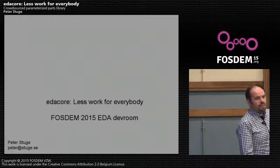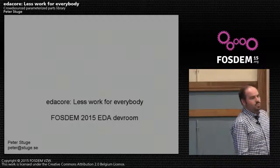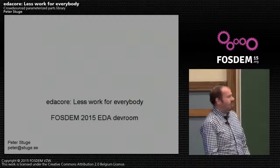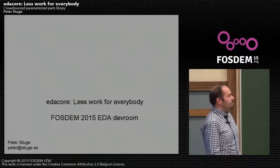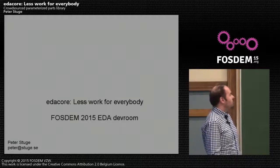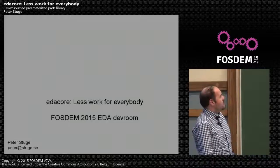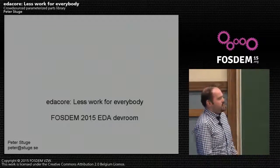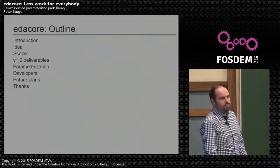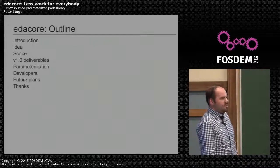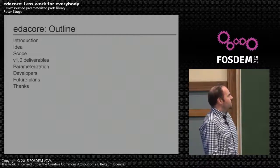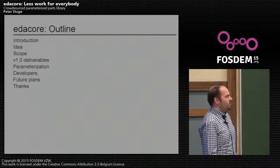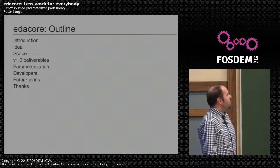I am going to talk a bit about EDA Core, which hopefully means less work for everybody. So an introduction - who I am, something about the idea of this, what the scope of the project is - that's very open. What I imagine are some deliverables for the first version, the concept of parameterization, which I think is an important part of this project, a bit about developer resources, my plans for the future, and perhaps others.